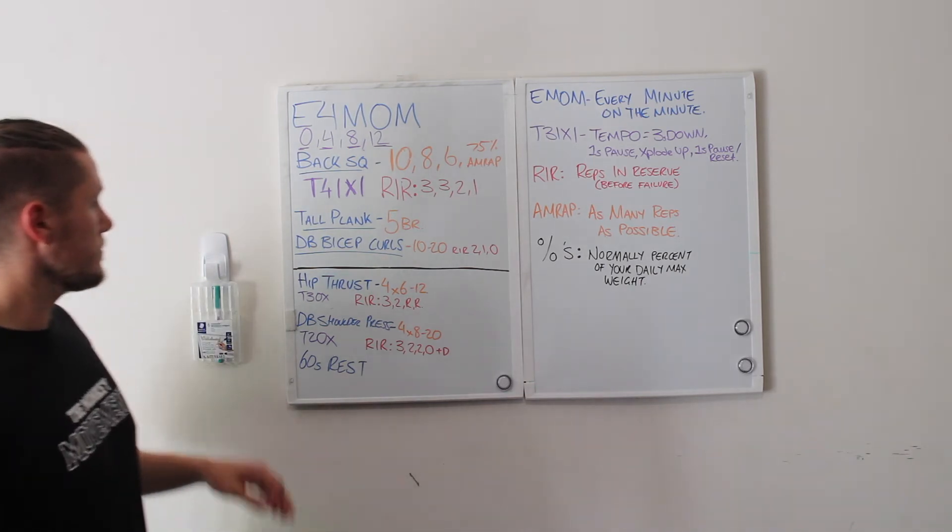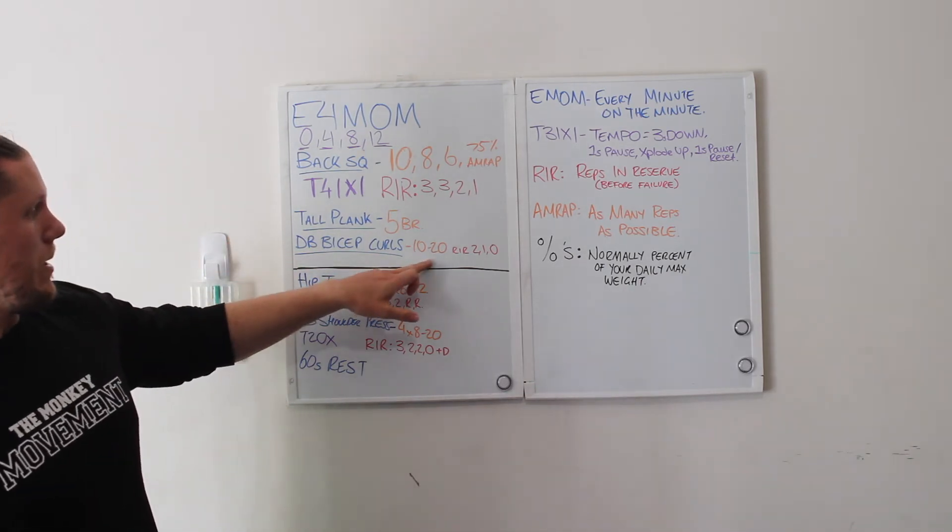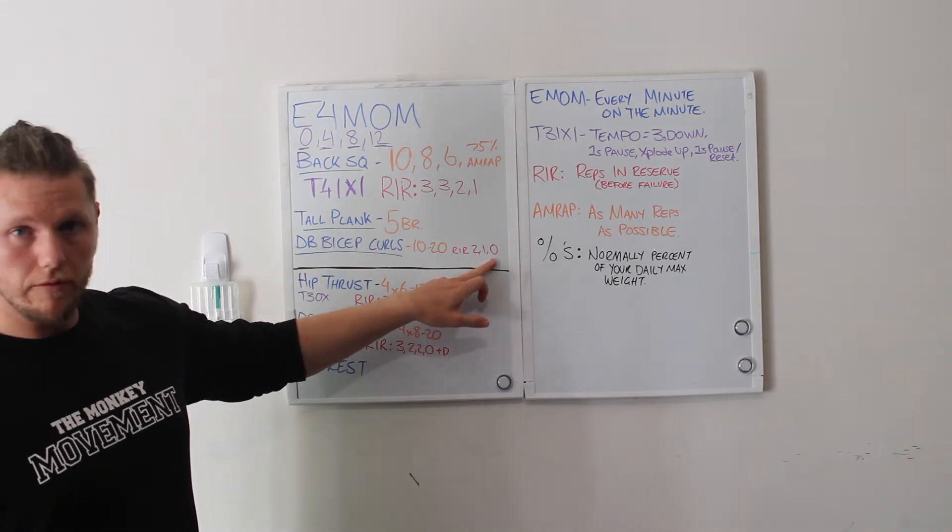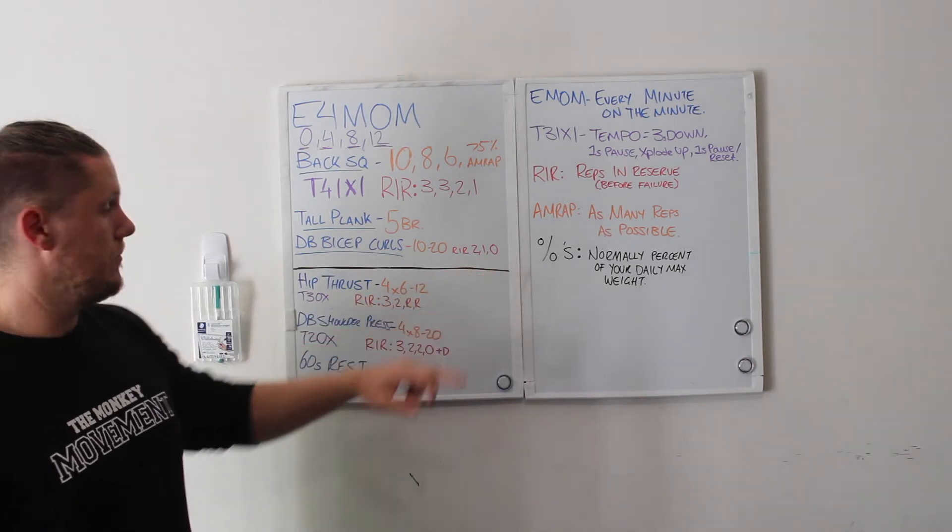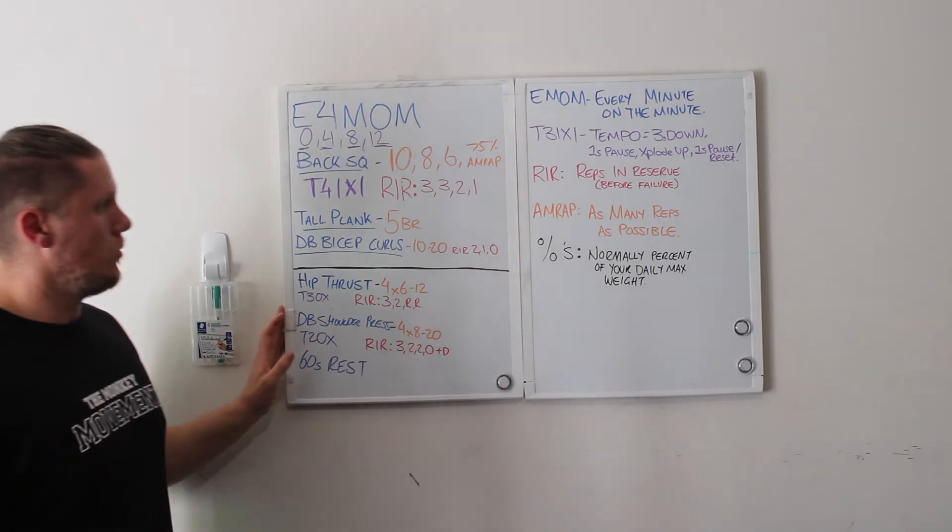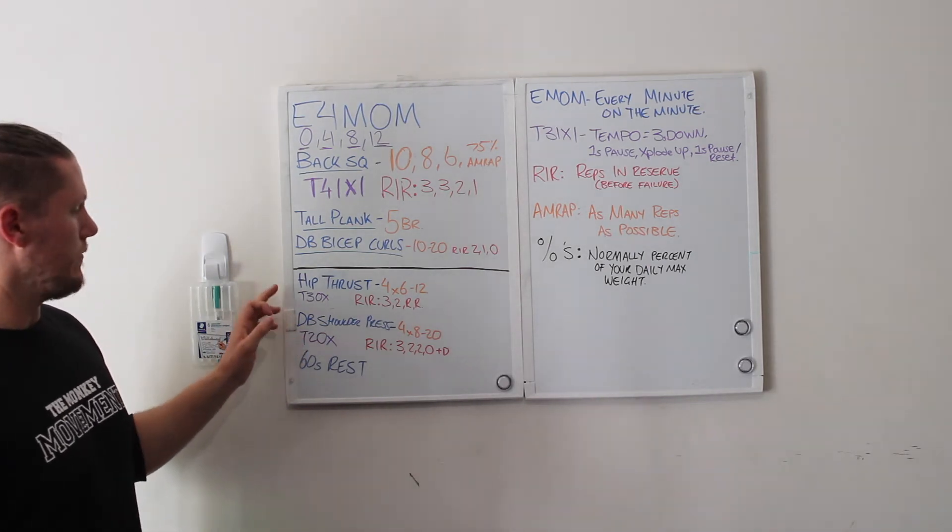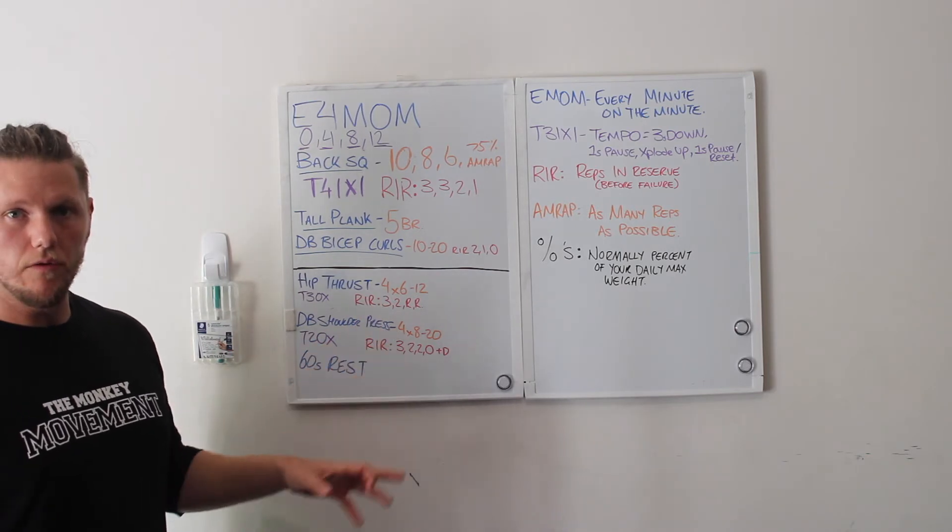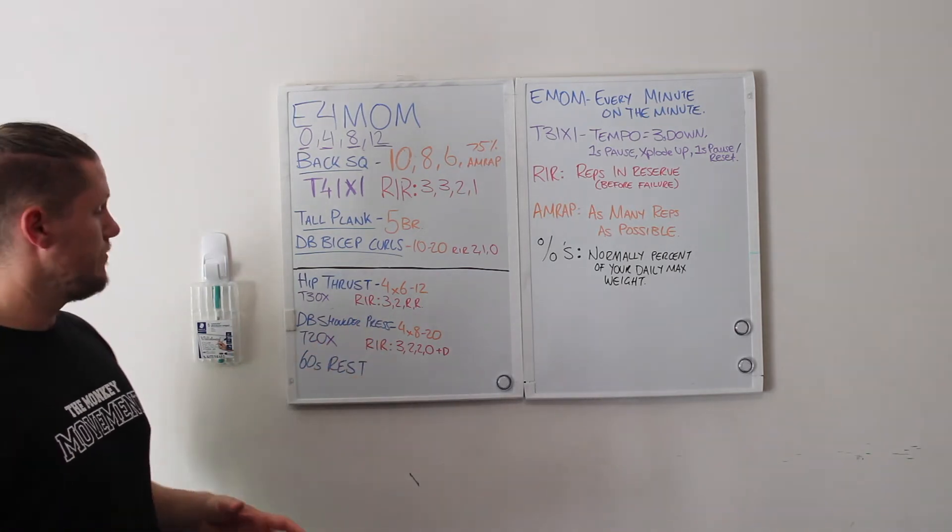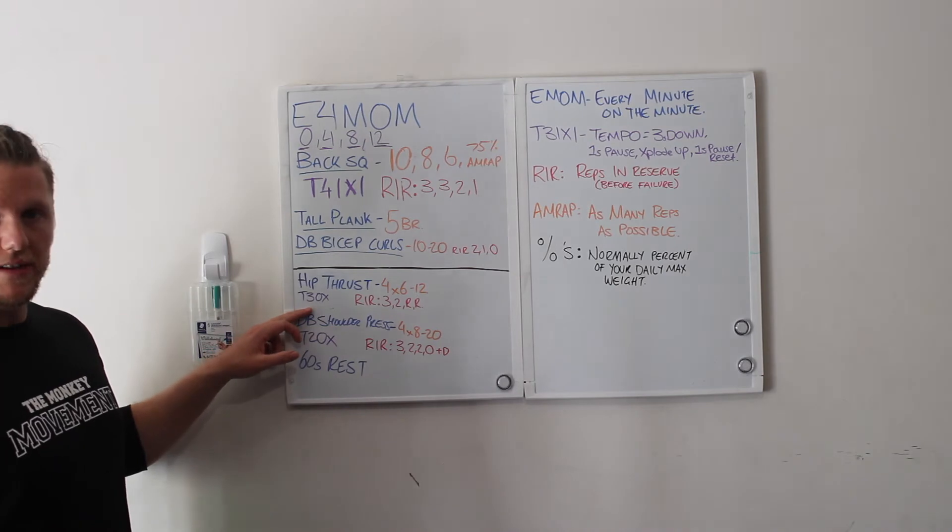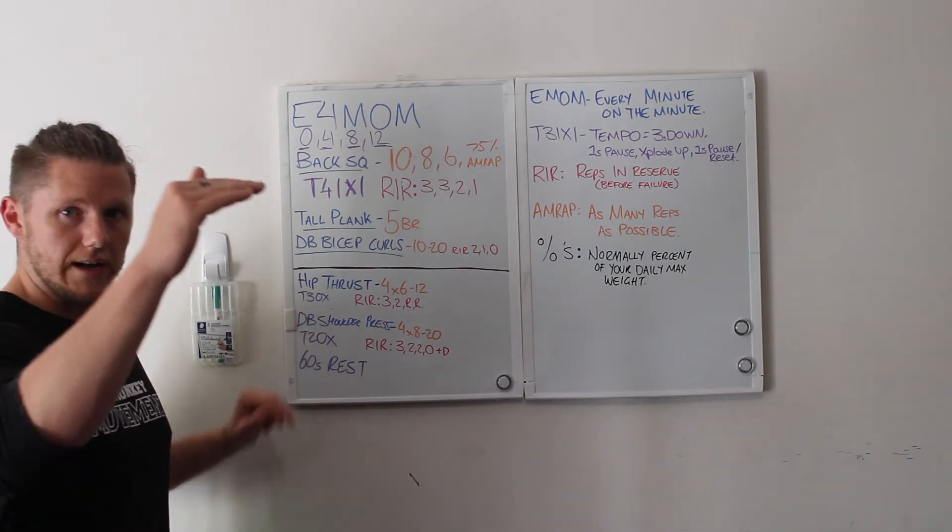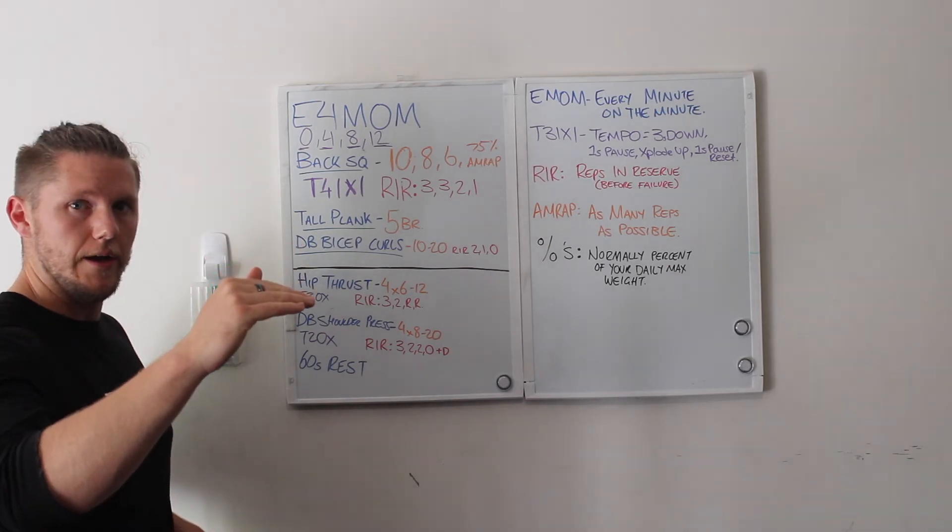Same with the dumbbell bicep curls. First set you'll leave two in the tank, one rep, no reps in the tank. Some more complex examples would be if I gave you a hip thrust, four sets of six to twelve. You've got to stay within that rep range. You got a T30X, so three down, no pause at the end of the rep, and straight back up.